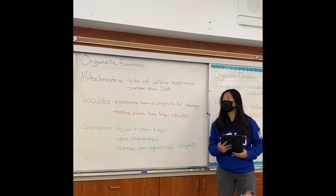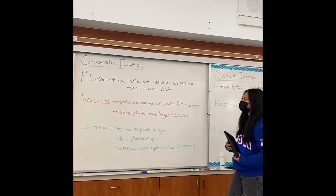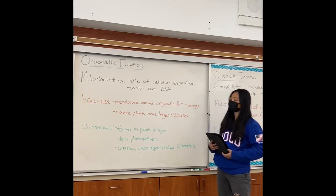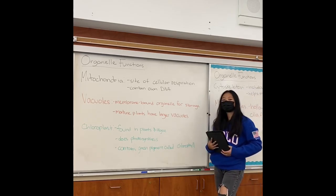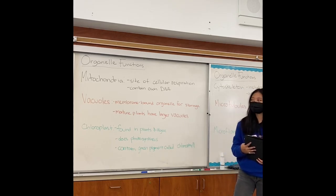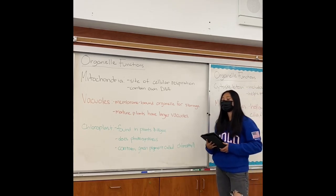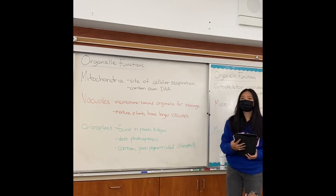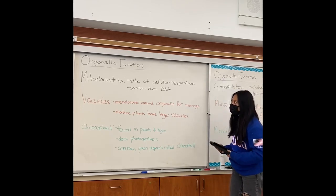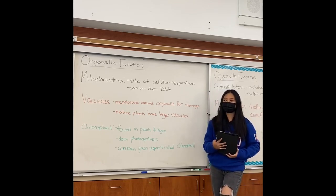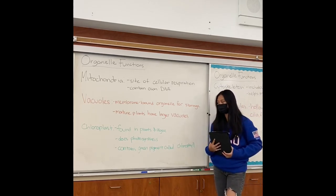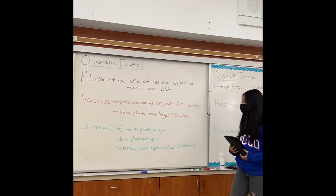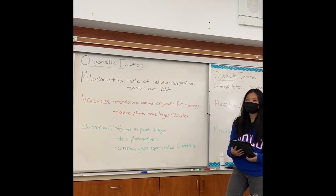Next, I'm going to talk about the mitochondria, vacuoles, and chloroplasts. The mitochondria is the powerhouse of the cell. It is the site of cellular respiration and contains its own DNA. Vacuoles are membrane-bound organelles used for storage — for example, water is stored in the vacuole. Mature plants have significantly larger vacuoles, while animal cells have smaller ones. Chloroplasts are found in plants and algae only. They contain a green pigment called chlorophyll and carry out photosynthesis, converting sunlight into energy.